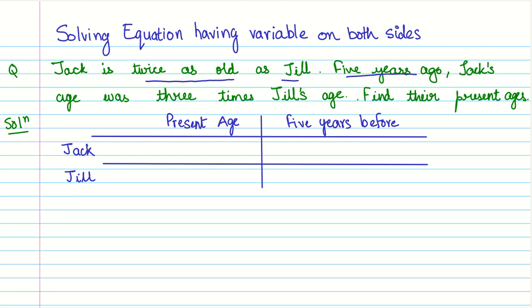We are given find their present ages. First thing is we know that Jack is twice as old as Jill. So we can assume Jill's age to be unknown. And we will say let Jill's age be X years. And this is the present age that they have given. It's implied that it's the present age. And therefore, Jack is going to be twice the age of Jill. So we got this first.